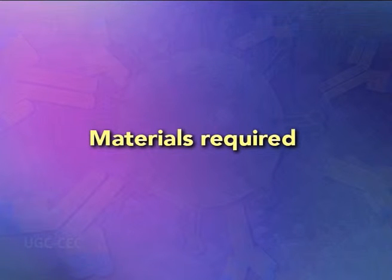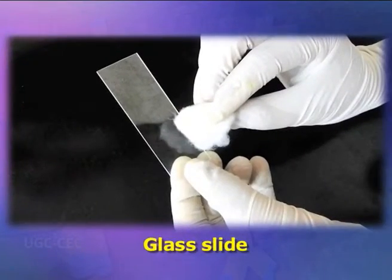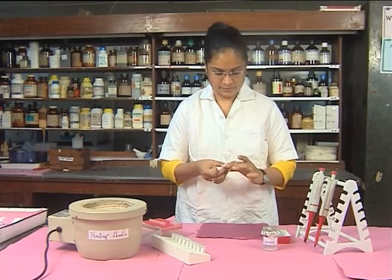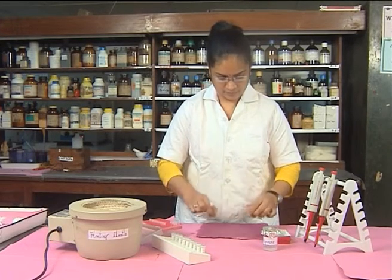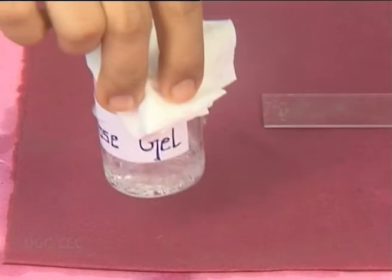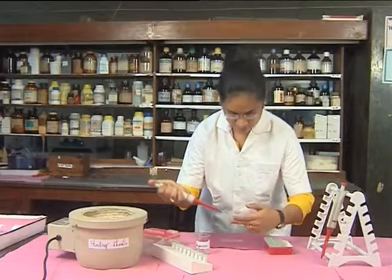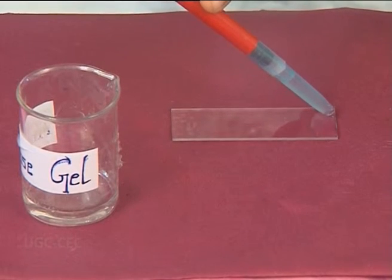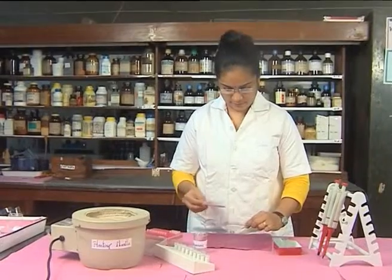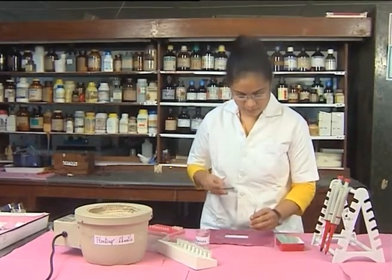Materials required to perform the practical include 1.2% agarose gel, sample antigens and antiserum, a glass slide and cup borer. Step one: wash the glass slide properly with detergent to make it grease-free. Step two: prepare the agarose gel, cool the agarose solution to 55–60 degrees Celsius, and pour 4 ml of agarose over the grease-free slide. Step three: using the cup borer, punch the wells by keeping the glass plate on the template showing the pattern of the wells.